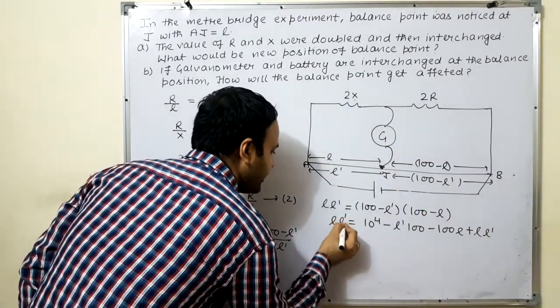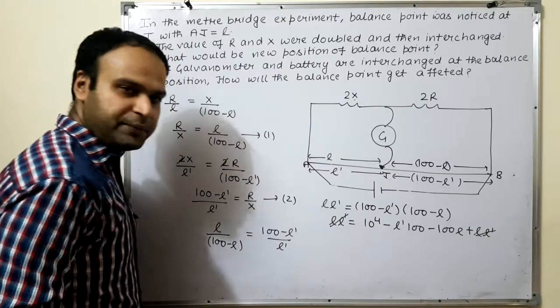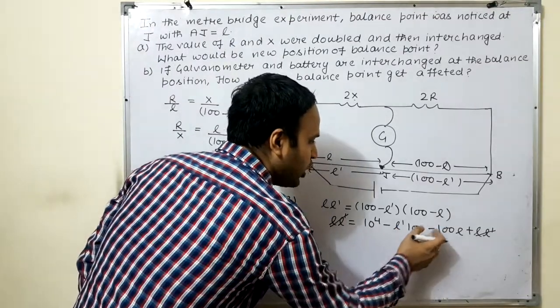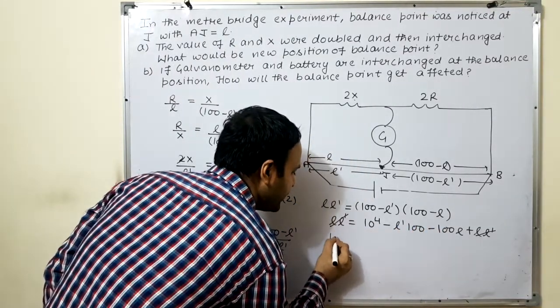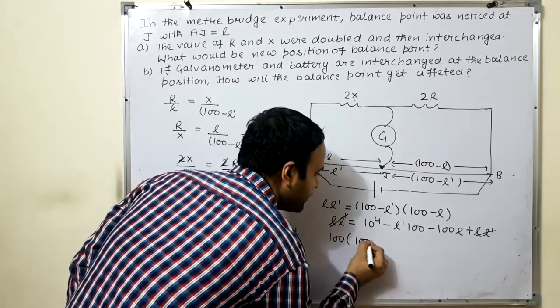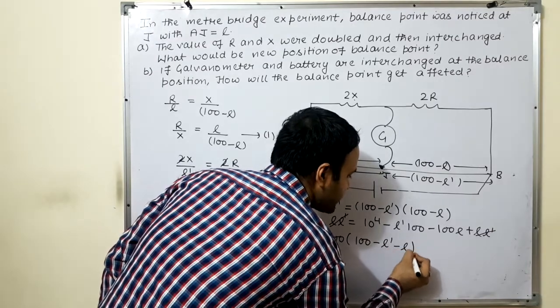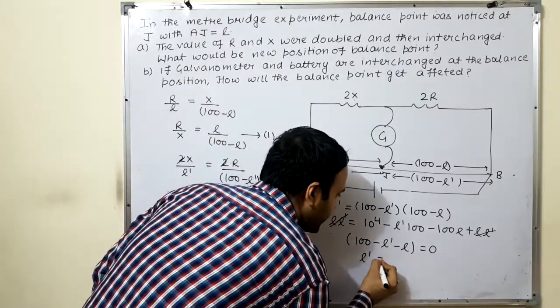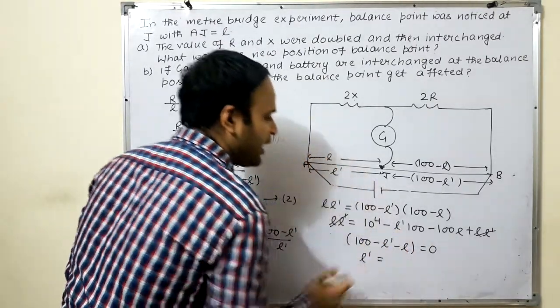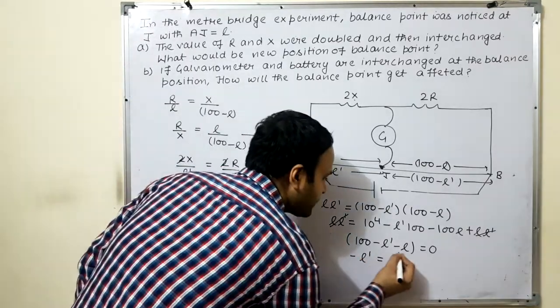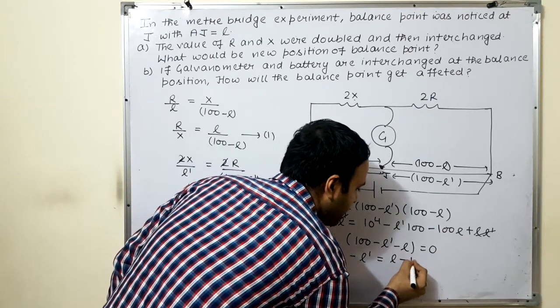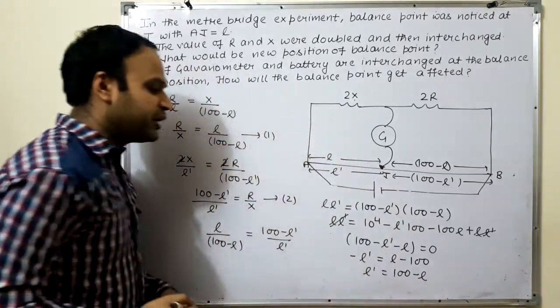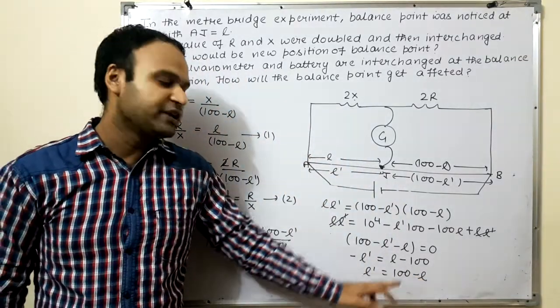This becomes L dash minus 100 L dash minus L plus L into L dash. This will be canceling out. Then hundred common, so hundred minus L dash minus L equal to zero. So L dash value is hundred minus L. Means the new position is at hundred minus L. Clear?